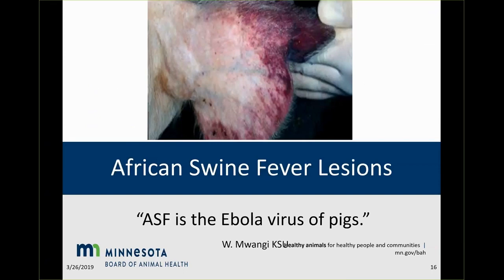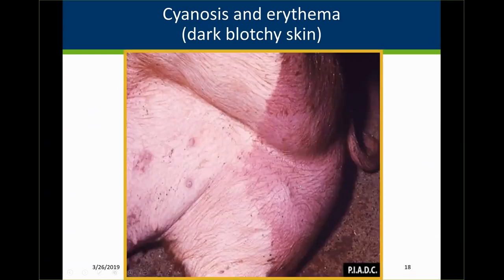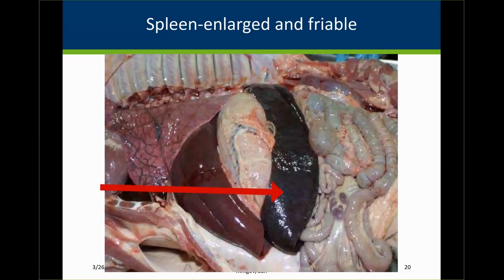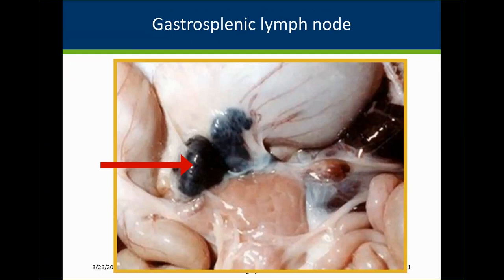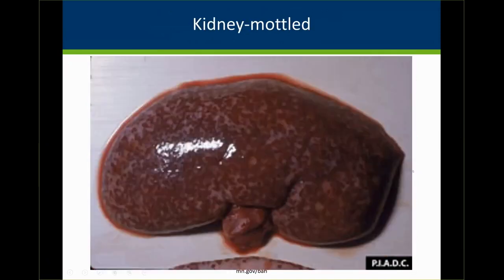If you're looking for this in postmortems, think of African Swine Fever virus as the Ebola virus of pigs — it's all about hemorrhage. There's a lot of cyanosis and blotchiness in the skin, both in the rump and on the ears, face, and even the snout. The spleen becomes very large and friable — it's an easy tissue to identify and has become one of the tissues diagnostic labs look for in the screening process. Submit spleen and also lymph node, as there's a lot of hemorrhage in the lymph nodes. The heart has blotchiness from hemorrhages and a lot of fluid in the pericardial sac. The kidney shows a mottled hemorrhagic appearance.